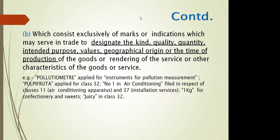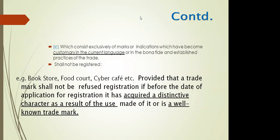Under Section 9(b), marks that serve to designate kind, quality, quantity, intended purpose, values, geographical origin, or time of production of goods cannot be registered. For example: 'pollutionometer' for pollution measurement instruments; 'pulpy fruta' applied under Class 32; 'air conditioning' for air conditioning apparatus or installation services; 'one kg' registered as a trademark for confectionery and sweets; or 'juicy' for a brand of juices cannot be registered. Examples like bookstore, food court, or cyber café also require trademarks not deceptively similar to others. Well-known trademarks in the café sector include Café Coffee Day and Starbucks — both provide gourmet coffee but are distinctive from each other.